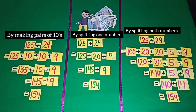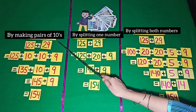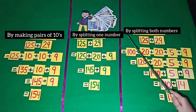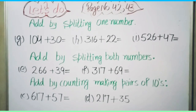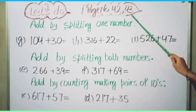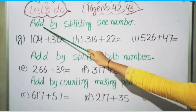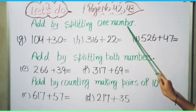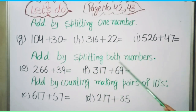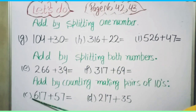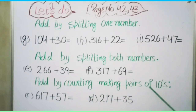Students, today you have learned methods of addition: making pairs of tens, splitting one number, and splitting both numbers using currency notes. For homework, from page numbers 42 and 43, do questions G, H, I from 'add by splitting one number', questions E, F from 'add by splitting both numbers', and questions C, D from 'add by making pairs of tens'. Thank you.